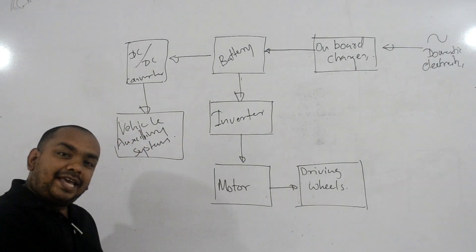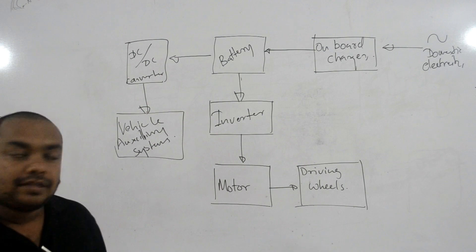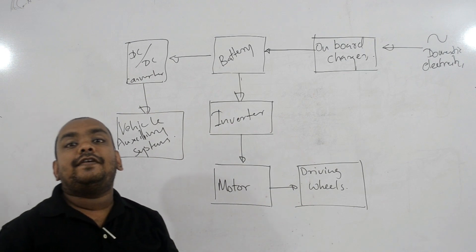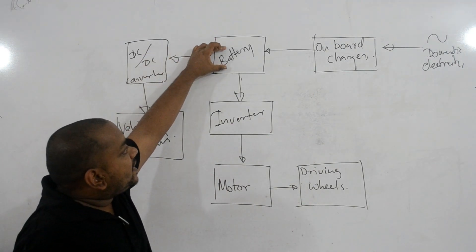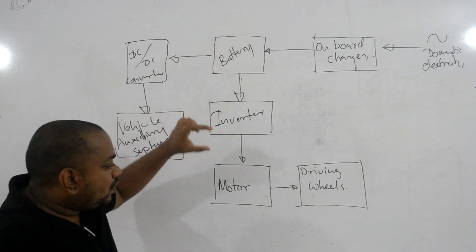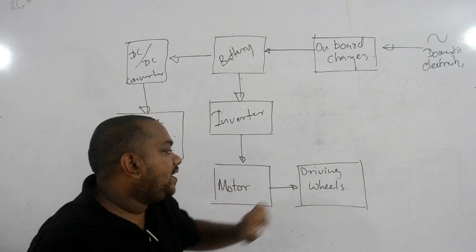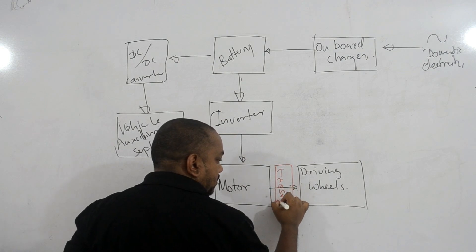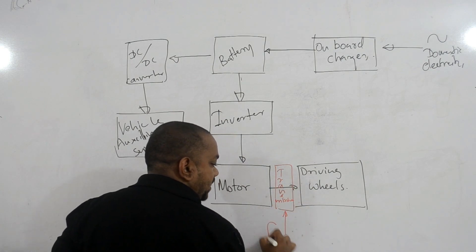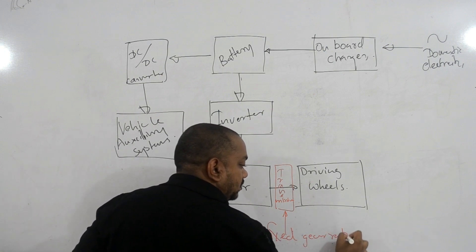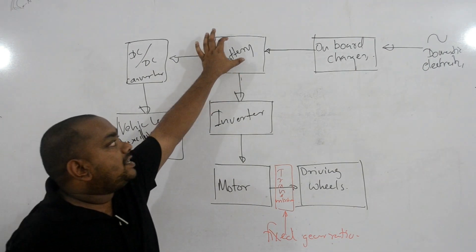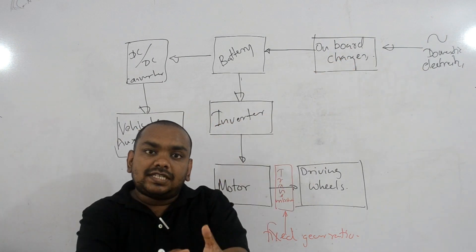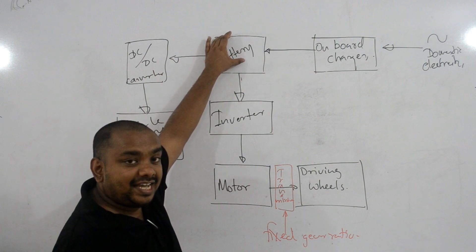This is the block diagram of an electric vehicle powertrain. We have the battery — the main energy storage device. The battery sends electricity to the inverter, which goes to the motor, and the motor drives the driving wheels through a fixed gear ratio transmission. The battery is charged by an onboard charger, which converts domestic electricity to DC and charges the battery according to its state.